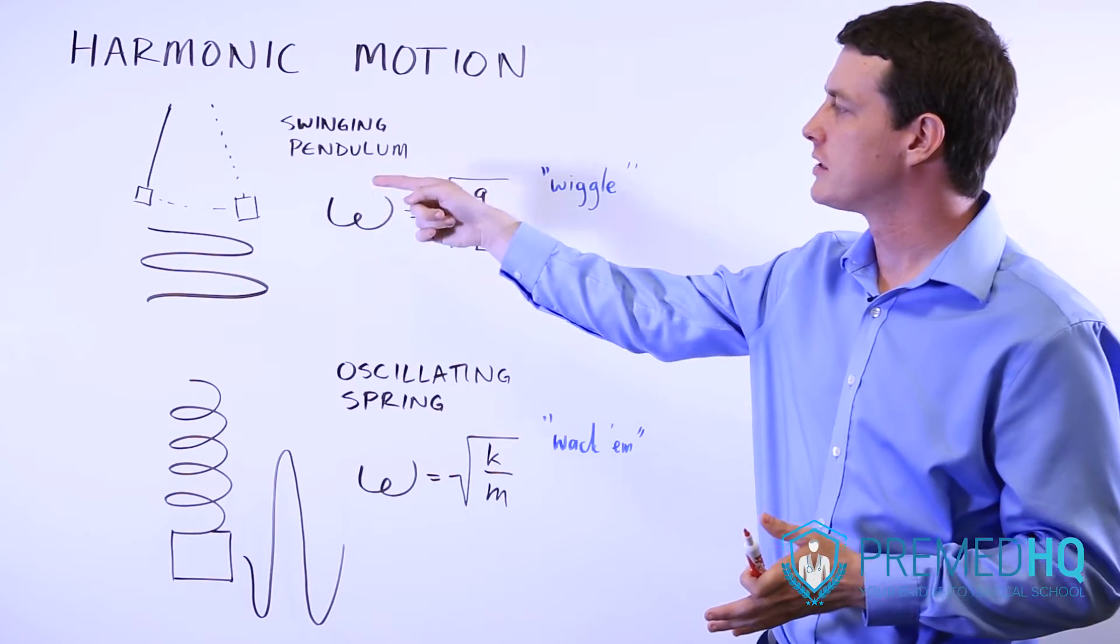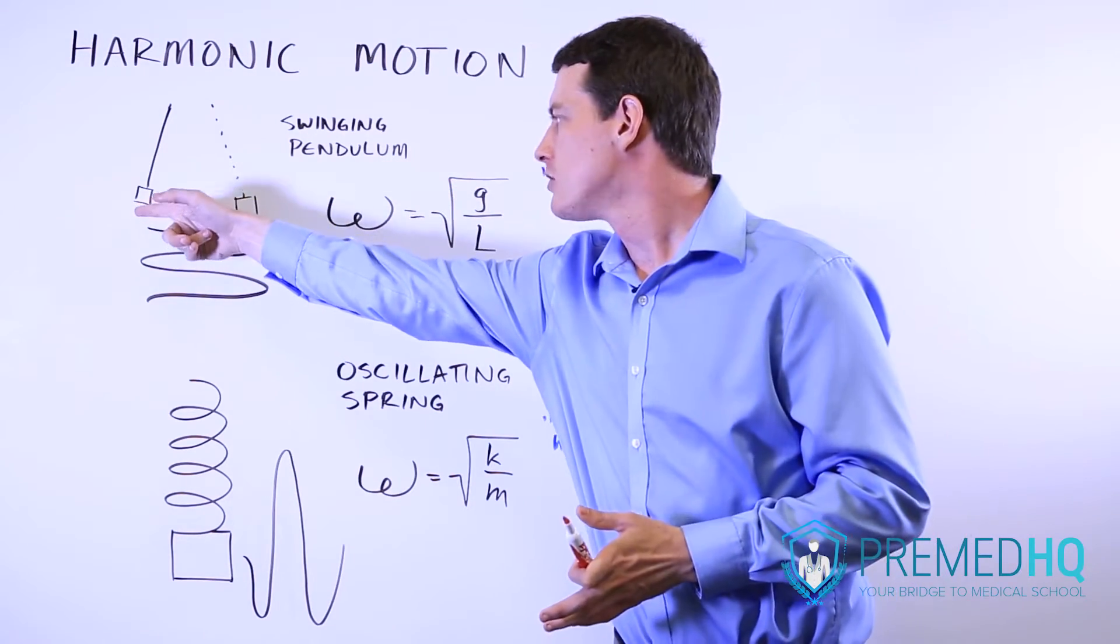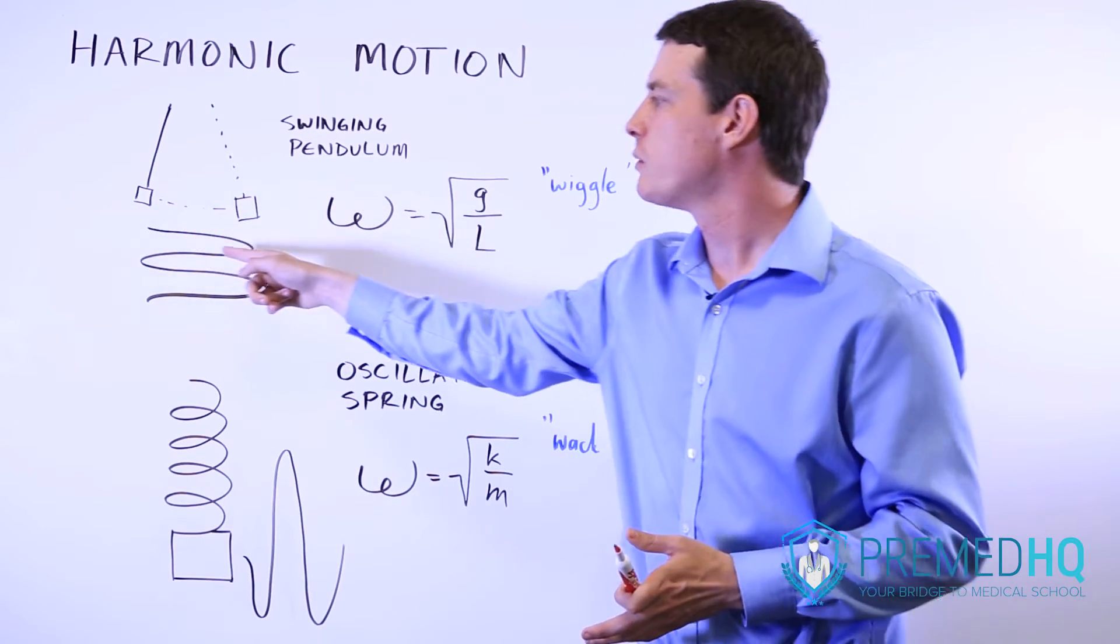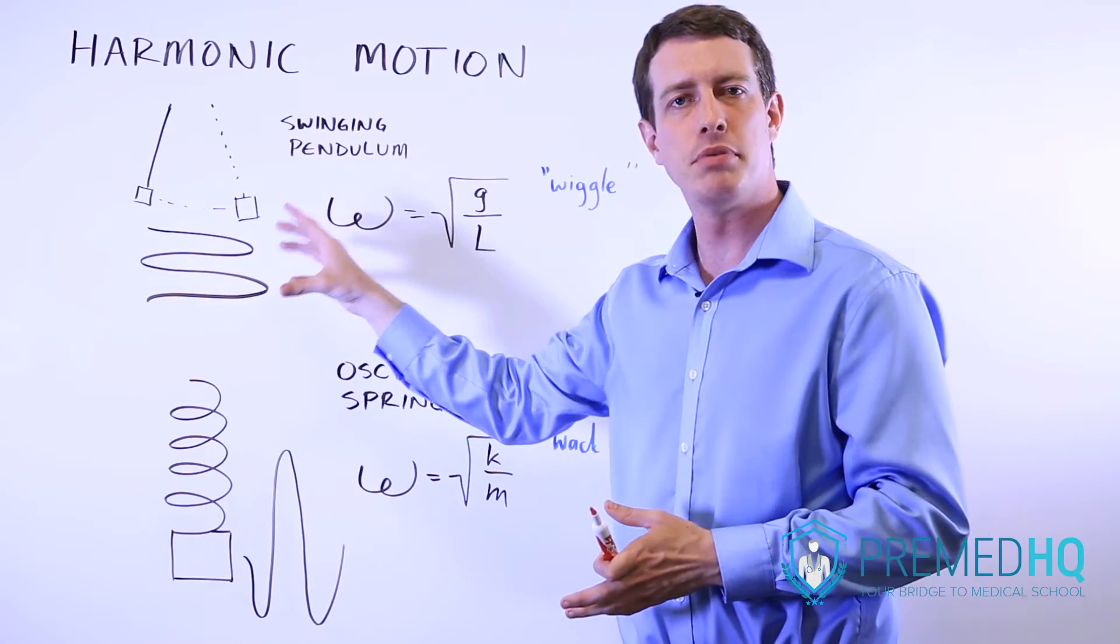So if you have a pendulum that's swinging, notice that if we were to track the position of this object over time, it would travel this way and then back and that would produce a waveform.